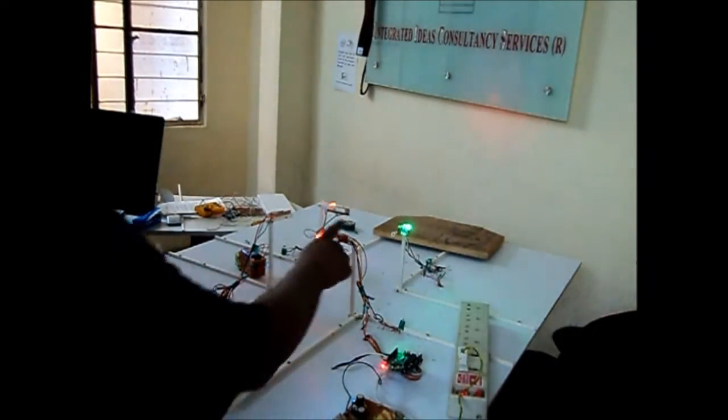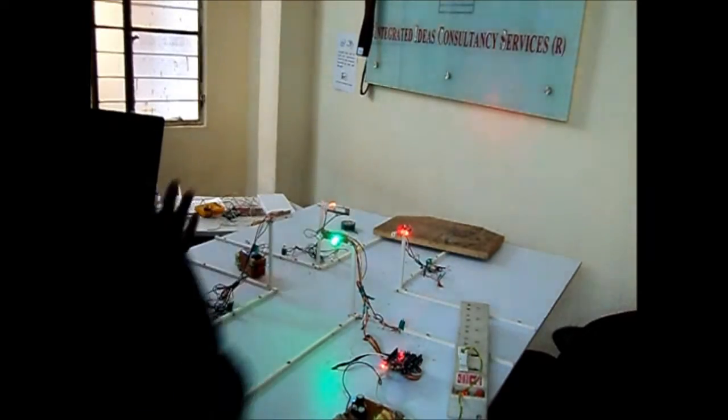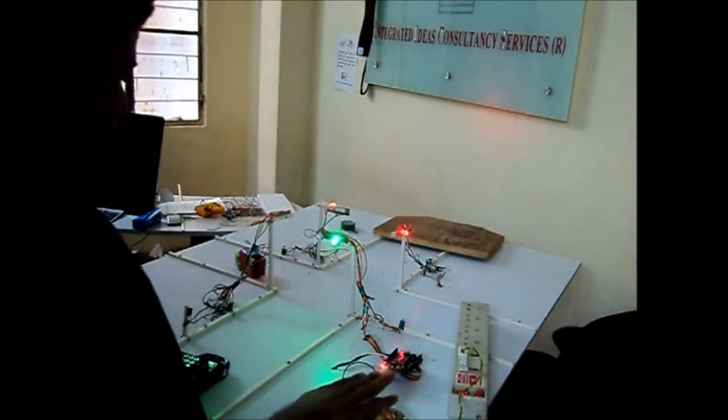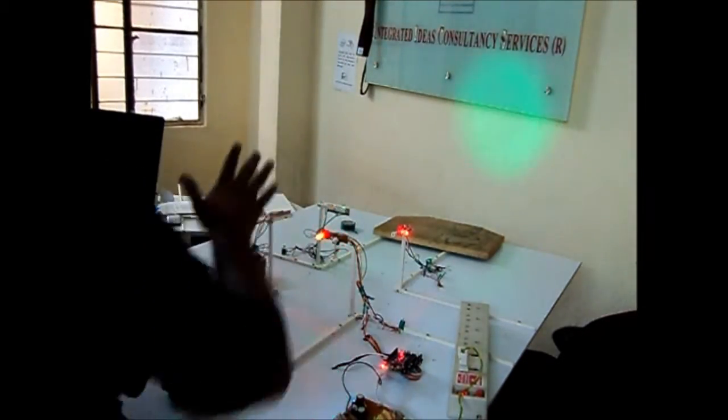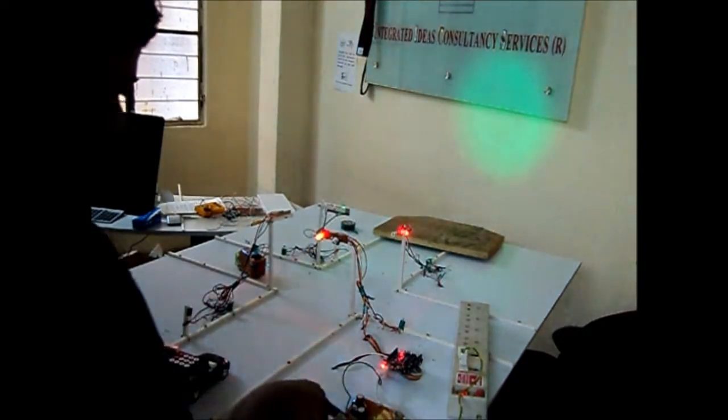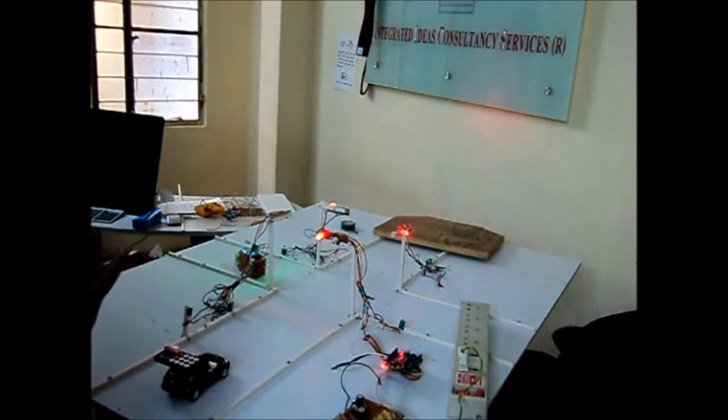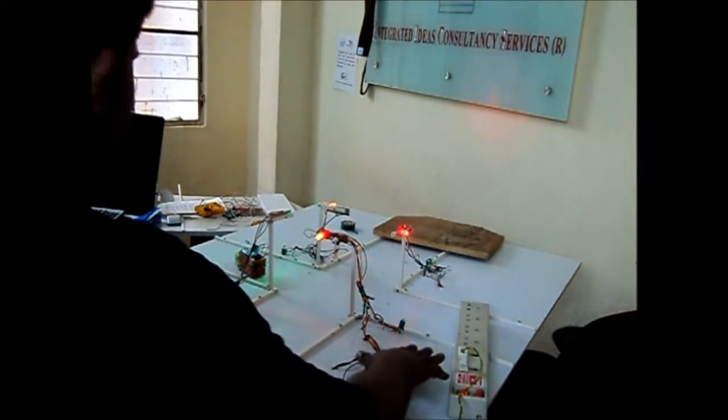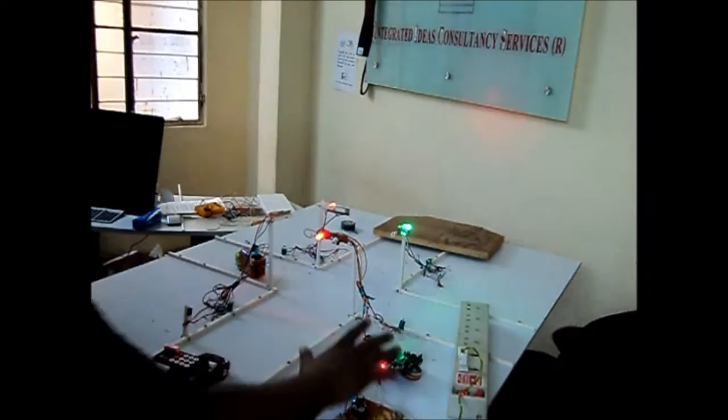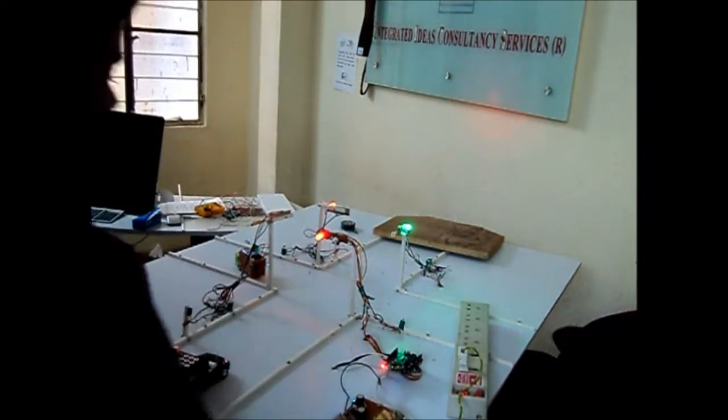This 5-volt power supply is given to all the four nodes, as well as the ground supply is given to all the four nodes. The ground of transformer is also shorted with the ground of Arduino microcontroller. This is called Arduino Uno. The ground is shorted with this thing.